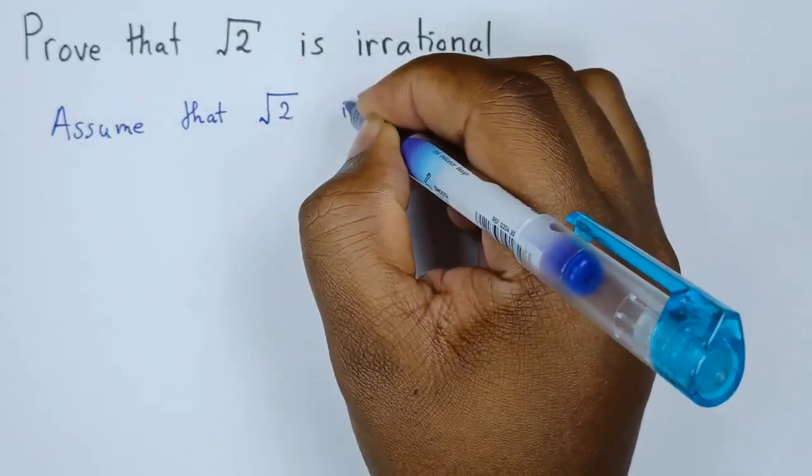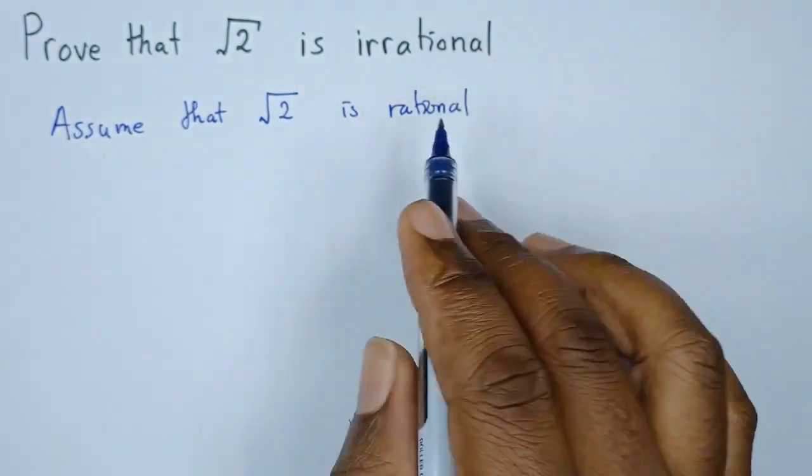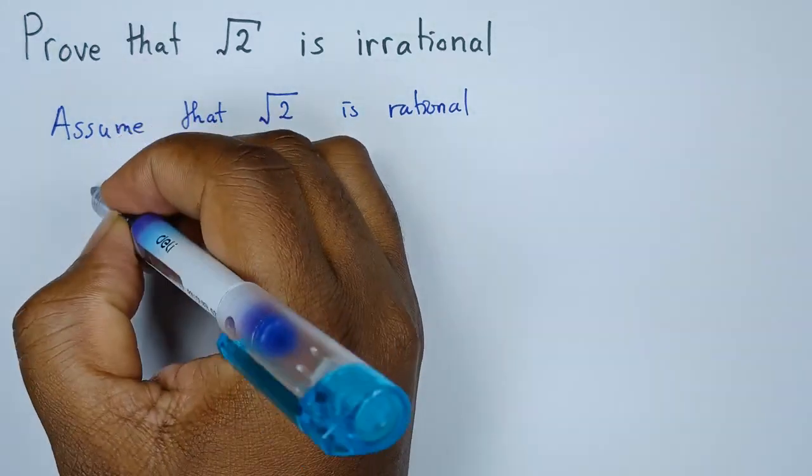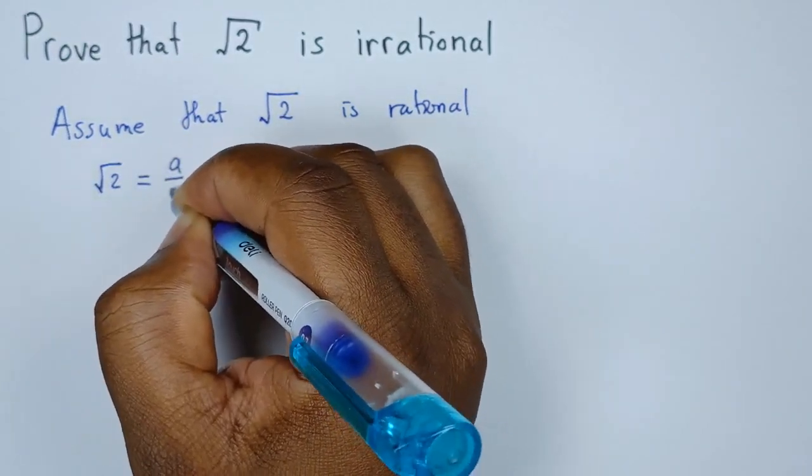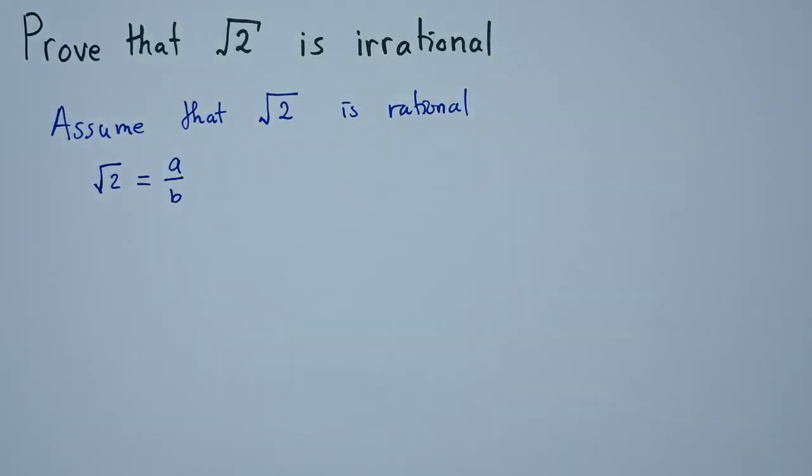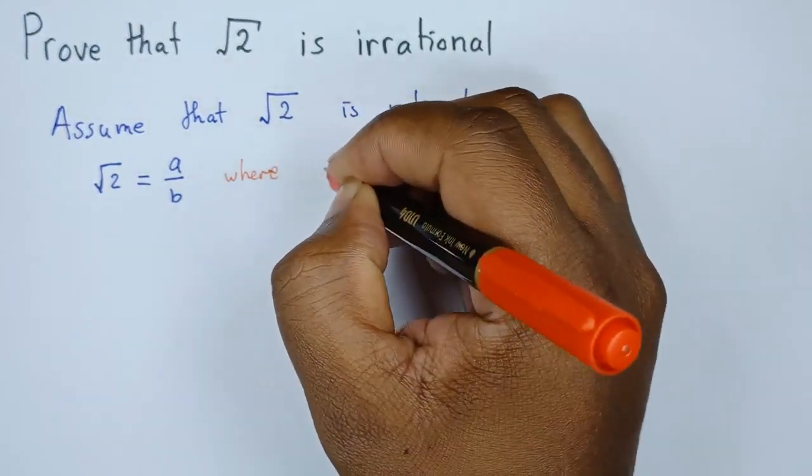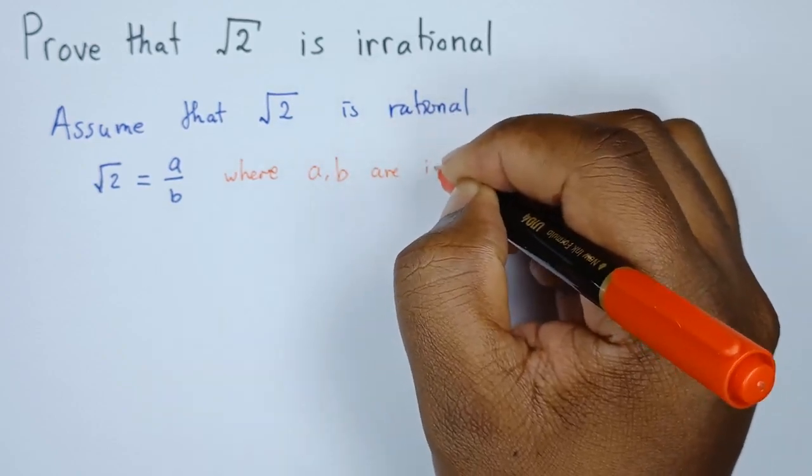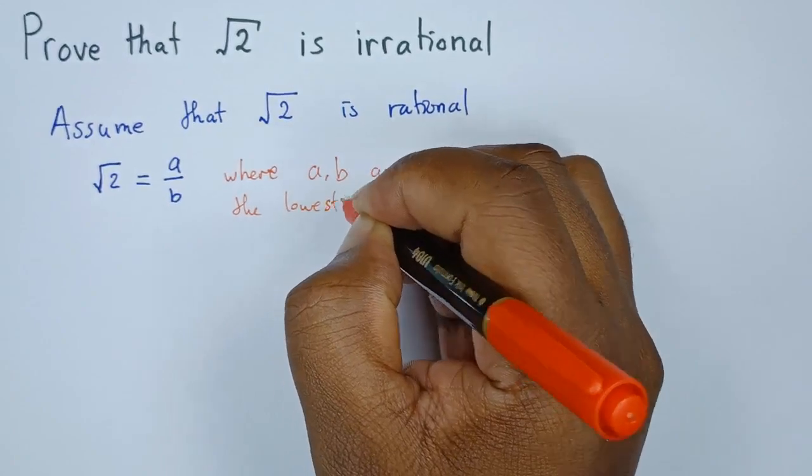If it is rational, this simply means that it can be expressed in its lowest fraction, and we can have it as root 2 equals a over b, where a and b are in the lowest terms. We know that a and b are representing integers in this case.